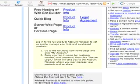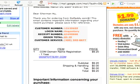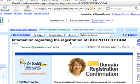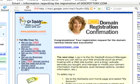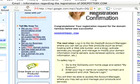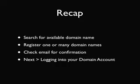We'll show you that in the next video. Now let's scroll back up and see the other email they send — information regarding the registration of your domain name — and they will let you know that it's a successful registration and give you additional instructions on how to log in to your account. As a recap: we've searched for an available domain name, then registered that domain name — or multiple domain names if you choose. After registration, you'll check your email for confirmation and be brought to a thank-you confirmation page on GoDaddy. Next up, we'll show you how to log in to your domain account at GoDaddy.